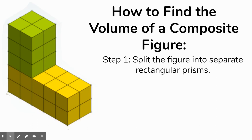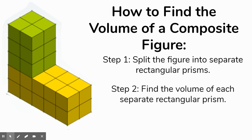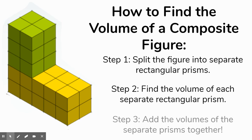Or I could choose to split it the other way, where the yellow prism is longer on the bottom and the green one is shorter. It really doesn't matter which way you decide to do this — no matter how you do it, you're going to end up with the same answer. The second step is, now that we've split it, we need to find the volume of each of these two prisms. We find the volume of the green and the yellow prism, and then we just add them together to get the total volume of the composite figure.